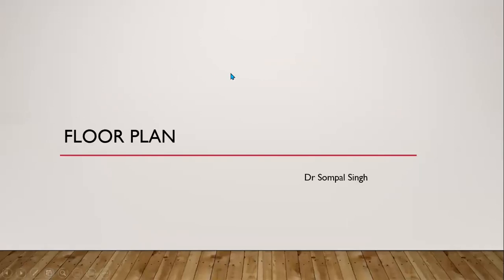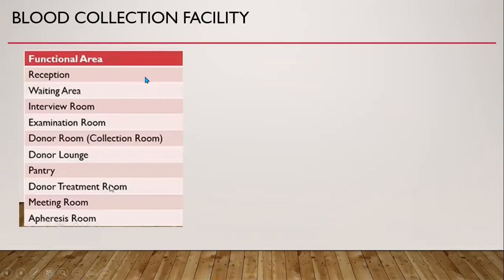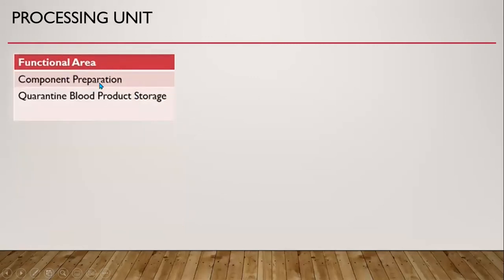Now let us see what is the floor plan of a blood bank. According to the WHO 2010 document, a blood bank has the following subsections: a blood collection facility, a processing unit, an inventory and distribution unit, a laboratory, a quality management unit, and an administration unit. The blood collection facility has a reception area, a donor waiting area, a donor interview room for counseling, an examination room, a donor room for bleeding or collection, a donor lounge, a pantry for refreshment, and a donor treatment room for adverse reactions.